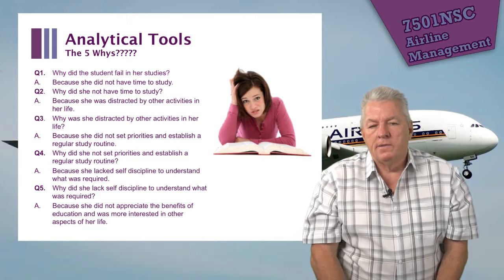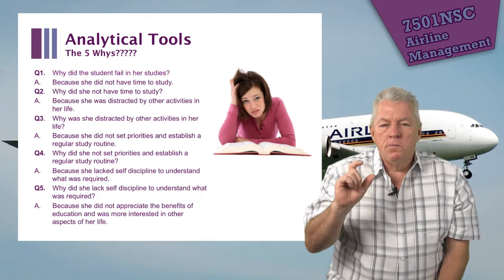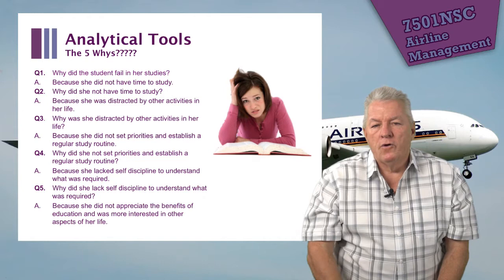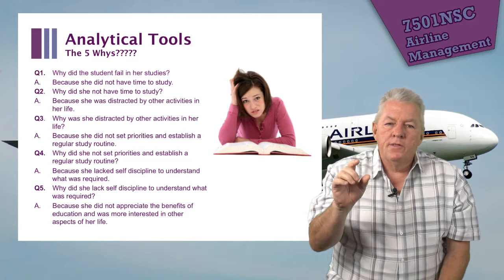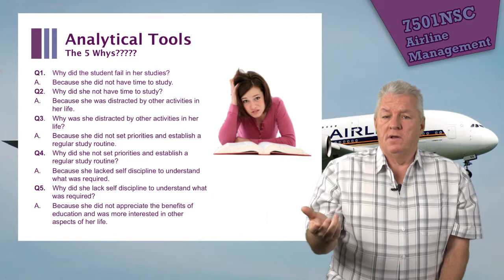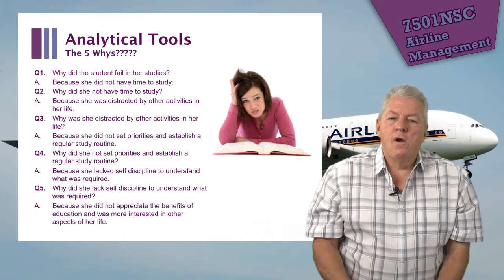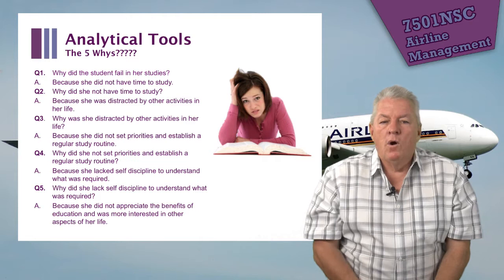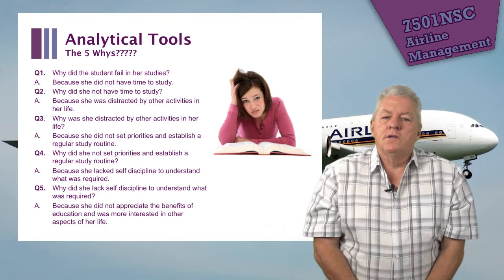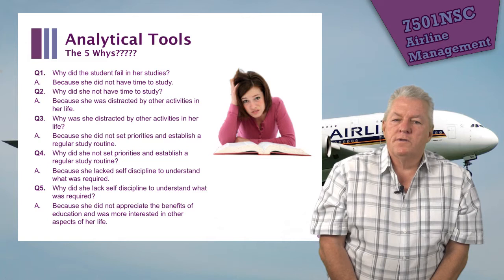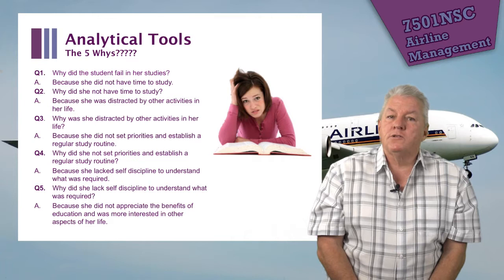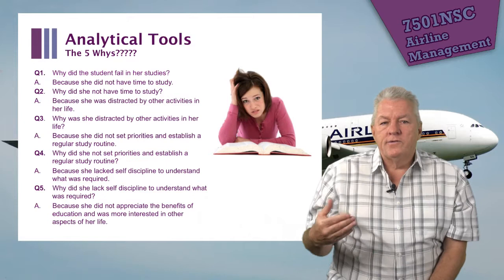Here's an example. Why did the student fail her studies? You need to be careful in the five whys not to skip a level. Because she did not have time to study. Why? Because she was distracted by other activities in her life. Why? Because she did not set priorities and establish a regular study routine. Why? Because she lacked self-discipline to understand what was required. Why? Because she did not appreciate the benefits of education and was more interested in other aspects of her life. That's a very powerful but simple tool.